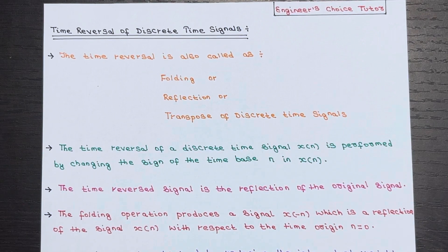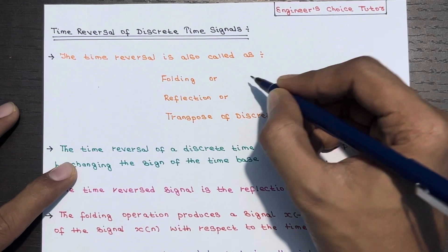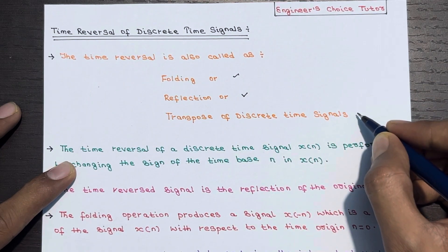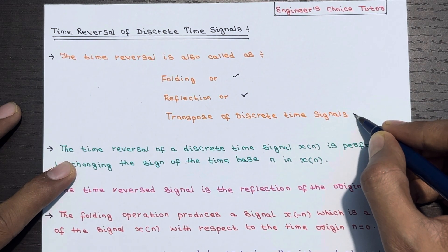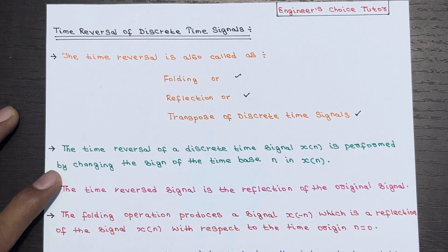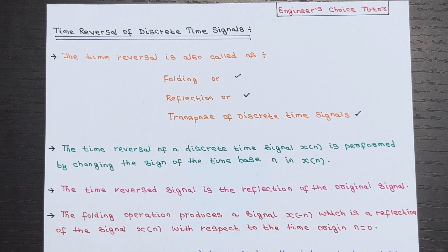Today we are going to dive into the fascinating concept of time reversal of a discrete time signal. Time reversal, also known as folding, reflection, or transpose of a discrete time signal, is a technique used to manipulate discrete time signals. It involves changing the sign of the time base n in the signal X of n.